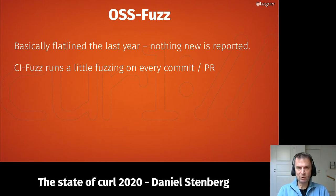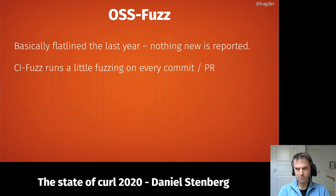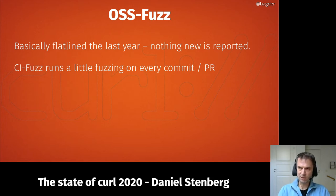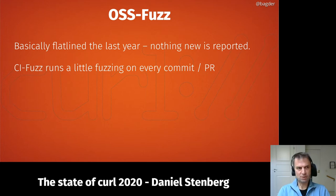We now also have a new feature called CI Fuzz, which runs 40 minutes of fuzzing on the code for every commit and pull request in the curl project. So if we commit something seriously wrong memory-wise, chances are CI Fuzz will find it. It's capped at 40 minutes, so there is still a risk that something slips through, but this is still a bump up in our CI infrastructure and helps us find more things earlier before they land.